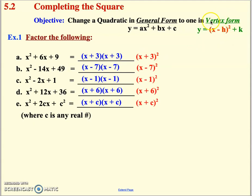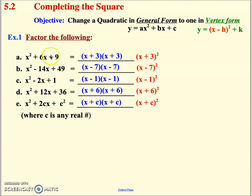That one factor squared is part of our vertex form. If we can create a unique quadratic that factors with two identical factors, we'll have at least part of our complete the square. The key connection is that the number 3 is half of the middle term 6, and when you square it, it produces 9. Negative 7 is half of negative 14, squared is 49. Negative 1 is half of negative 2, squared is 1. Positive 6 is half of 12, squared is 36.